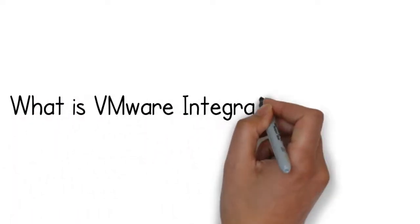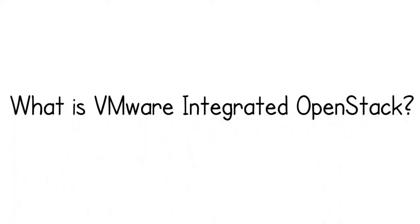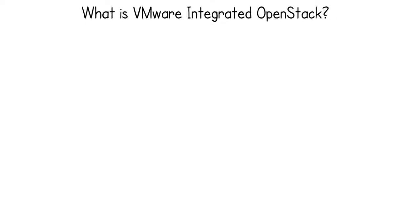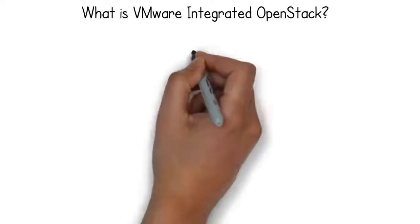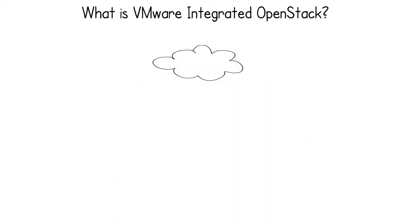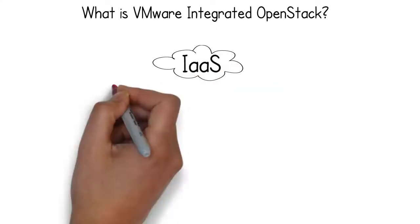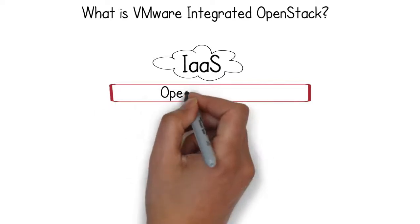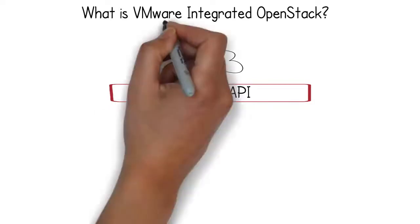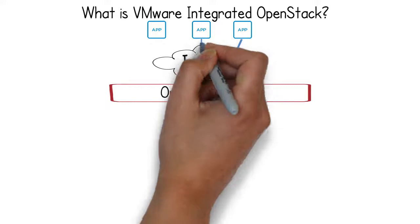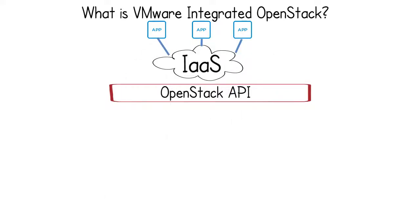What is VMware Integrated OpenStack? Before answering that question, let us take a look at OpenStack. OpenStack is an open source framework for delivering cloud-based IaaS. OpenStack provides applications with API access to cloud services. It is best suited for cloud-native applications that are specifically designed for cloud computing environments, as opposed to applications that are simply being migrated to the cloud.